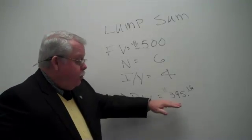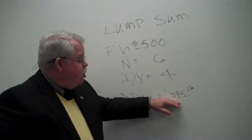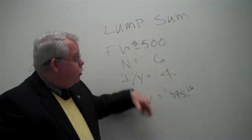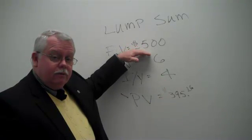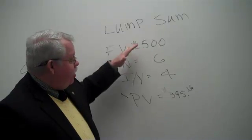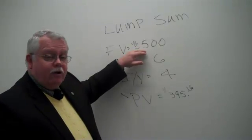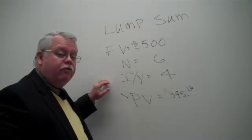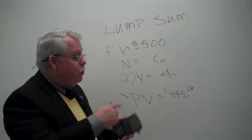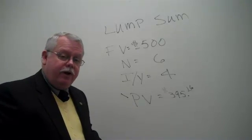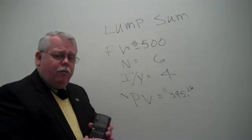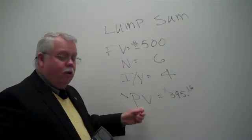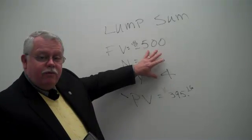What does this tell us? Equivalently, what it's saying is that if you had $395 today and you put it in the bank for six years earning 4%, it would grow to become $500. The basics of lump sum calculations are calculating either the future value or the present value, given that you know the other information.